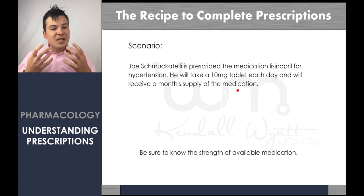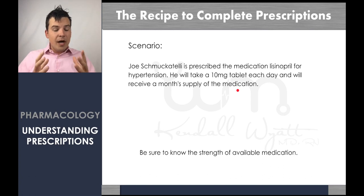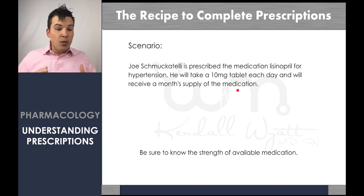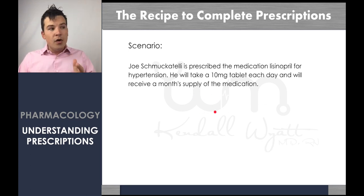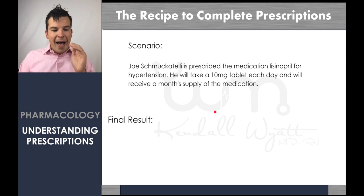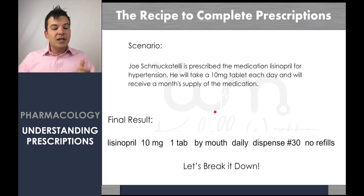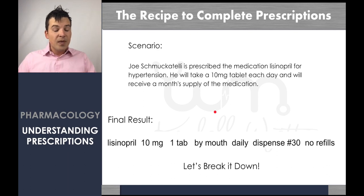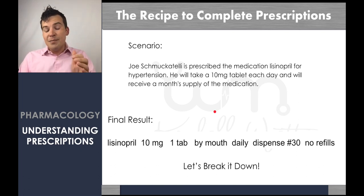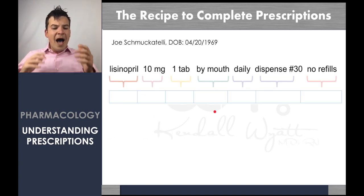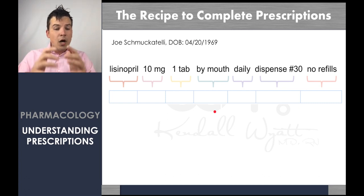You've got to know the strength of the actual pill that's going to be given — you can look that up in Hippocrates, Micromedex, or whatever resource you want to use. If you don't know the strength, pharmacy is always there to help. The final result should be: lisinopril 10 milligrams, one tab by mouth daily, dispense number 30, no refills. Let's break this down piece by piece and go over abbreviations and other things, because this is the basic one and they get more complex as we go.